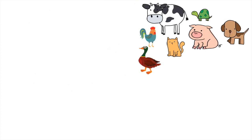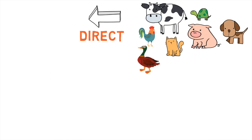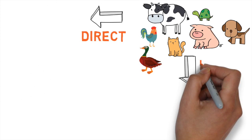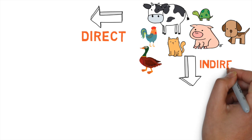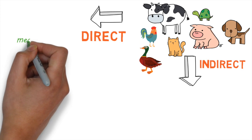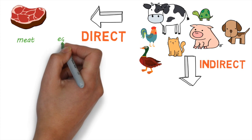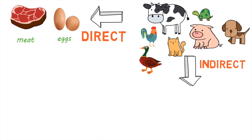From these sources, the bacteria can spread to humans either directly or indirectly. For example, it can spread to people directly when they eat contaminated meat or animal products like eggs that are not cooked properly. Eggs, in fact, are a very common cause of Salmonella outbreaks.